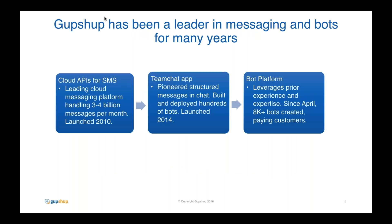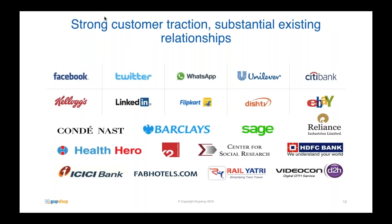We have a bunch of cross-channel APIs that we support — pretty much any messaging channel that has opened up their system for APIs is supported by GupShop, including Twitter, Telegram, Facebook Messenger. We have integrations with Smooch, as well as Filio, Reliance Jio, and Viber coming up soon. GupShop has been a leader in the messaging and bot space for many years, starting in 2010 as a cloud API for SMS. We handle about three to four billion messages per month.